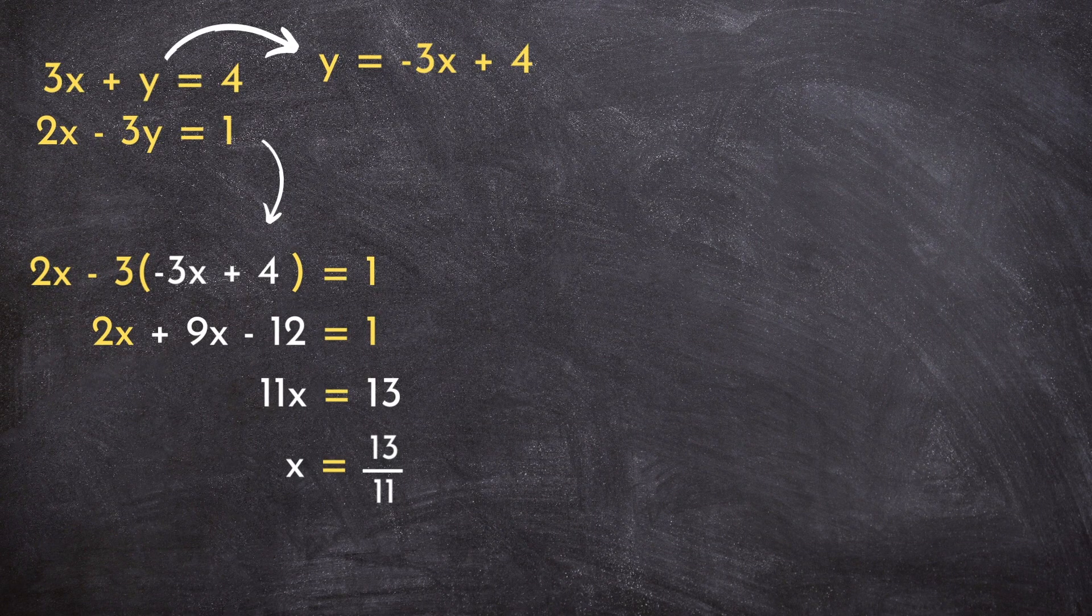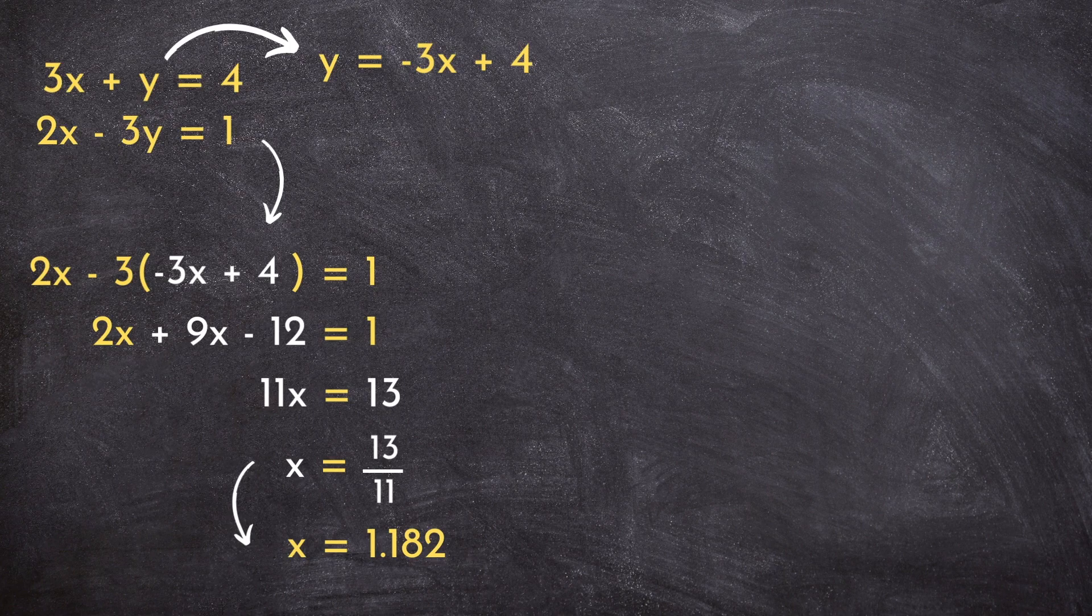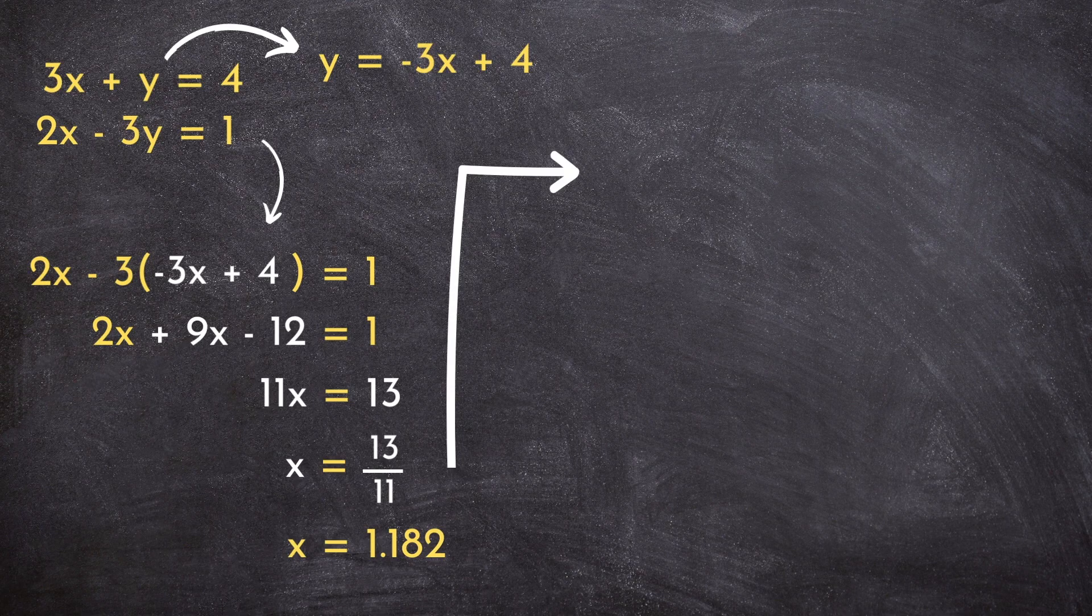If you're not a fraction person, you can think of 13 over 11 as approximately 1.182, if that makes it any easier for you. We'll keep marching along as usual with our substitution method and sub this fractional x value into our expression for y.